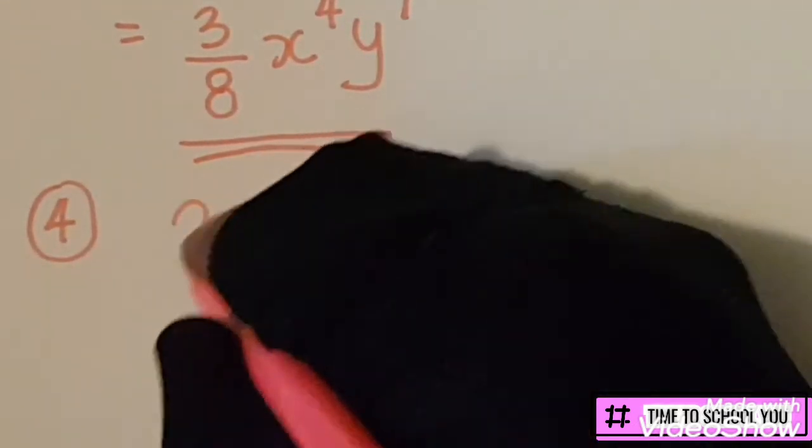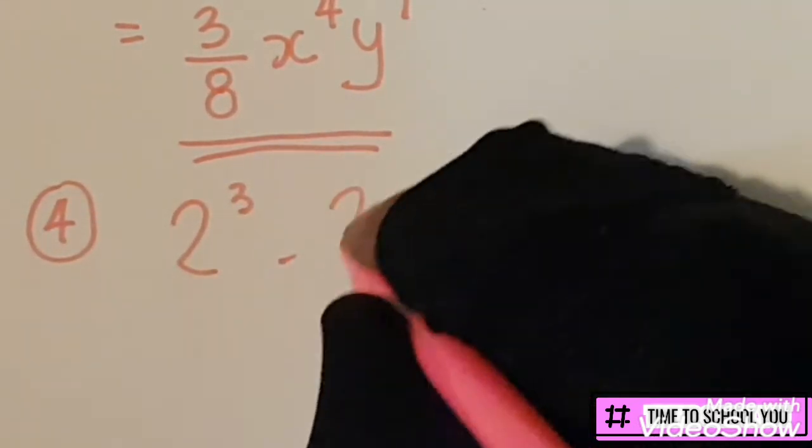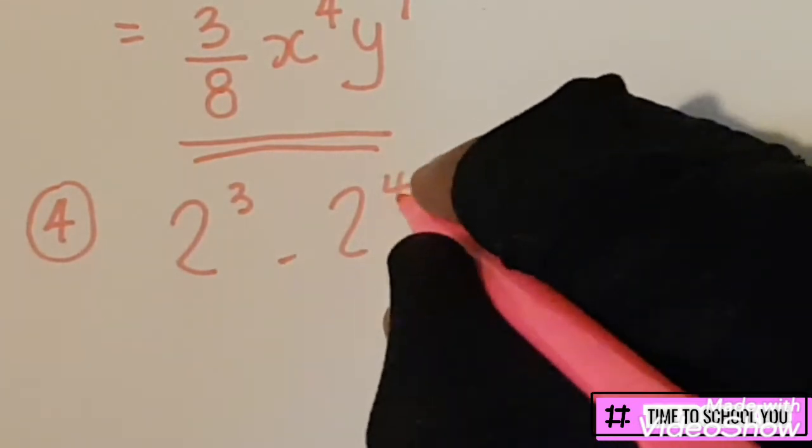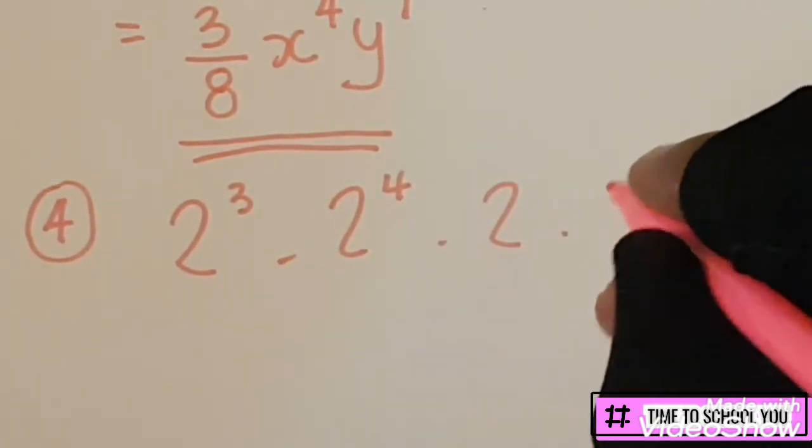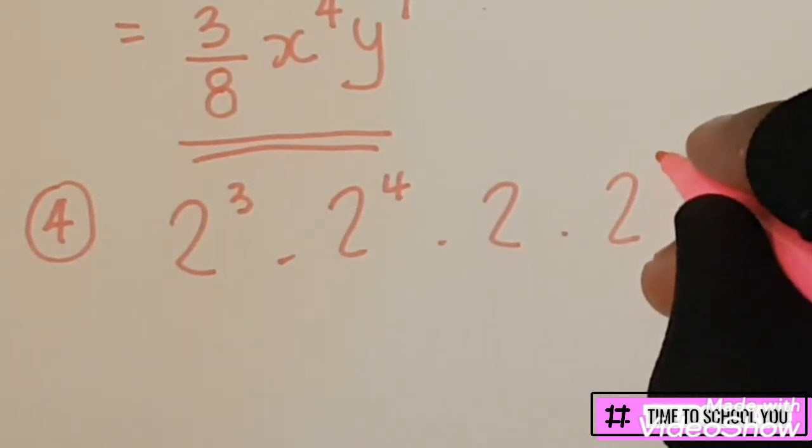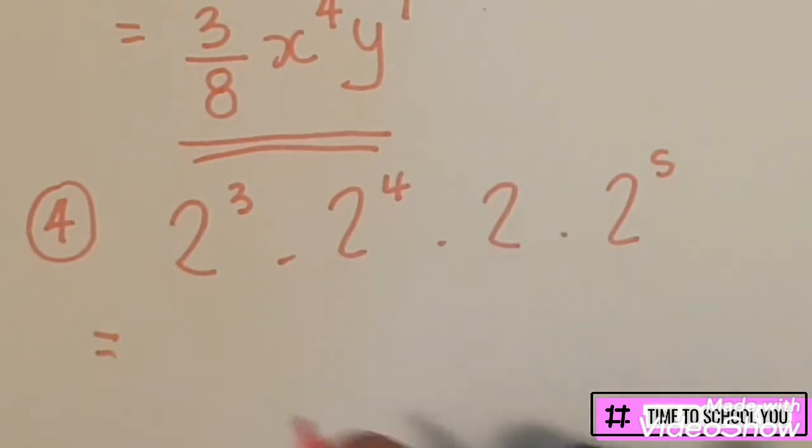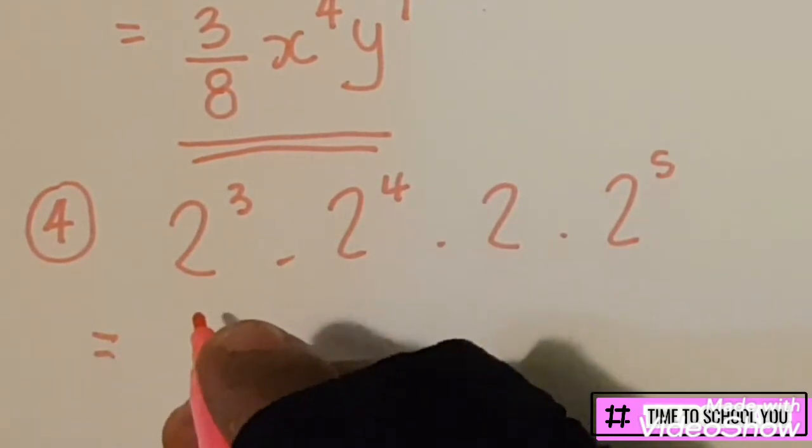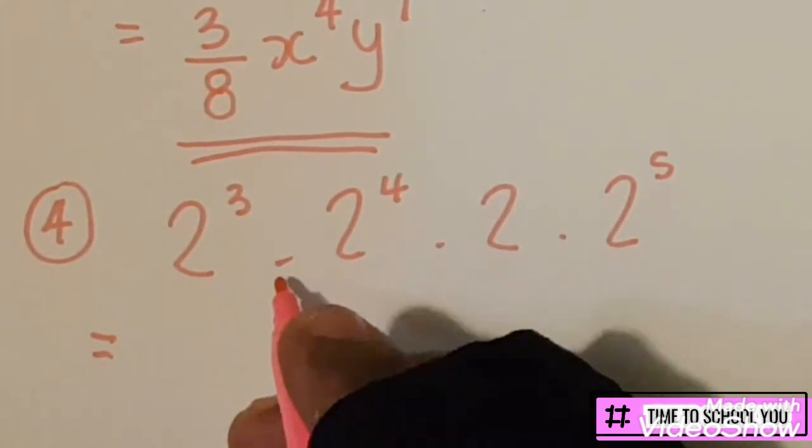Last type for Law 1 would be when we get 2^3 · 2^4 · 2 · 2^5. So an example like this here is where, although these are numbers, these are numbers in exponential form. So the bases are the same, they're being multiplied—remember the dot stands for multiplication.